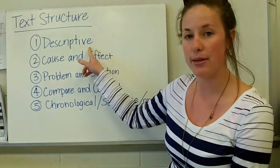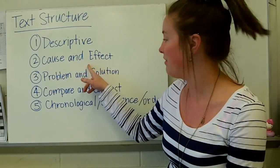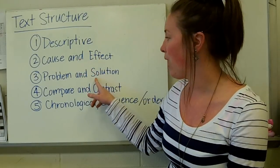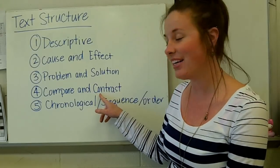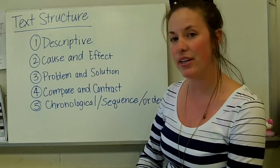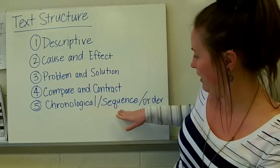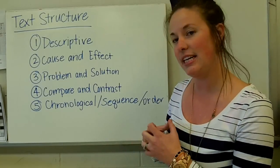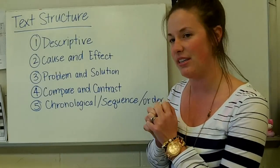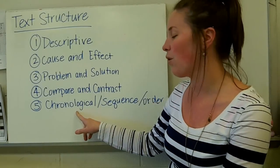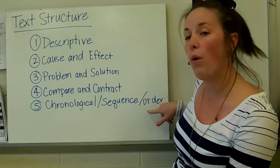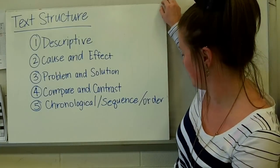There are five different kinds of text structures that we are going to be focusing on. The first is descriptive. The second is cause and effect. Third, problem and solution. Fourth, compare and contrast. And the last one is not one long word, it's just synonyms for it that you might see it called in different places. So it could be called chronological, sequence, or order. So let's get started.